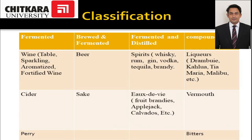When we classify alcoholic beverages, we can identify four categories. The first is fermented beverages — beverages which undergo only the process of fermentation. Examples include wine, which can be classified into table wines, sparkling wine, aromatized wine, and fortified wine. Cider is a wine made from apples, and perry is a fermented beverage made from pears.